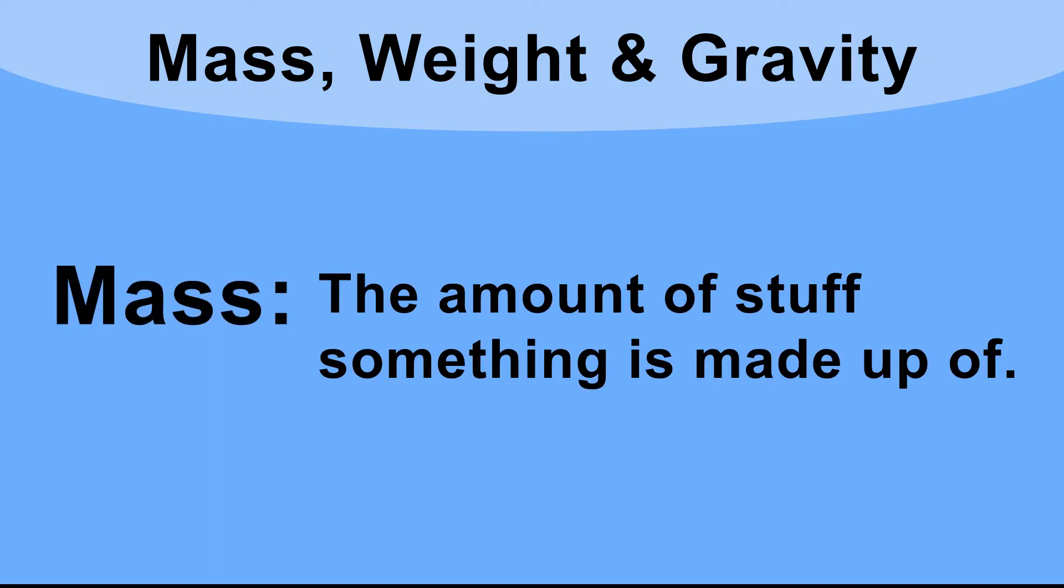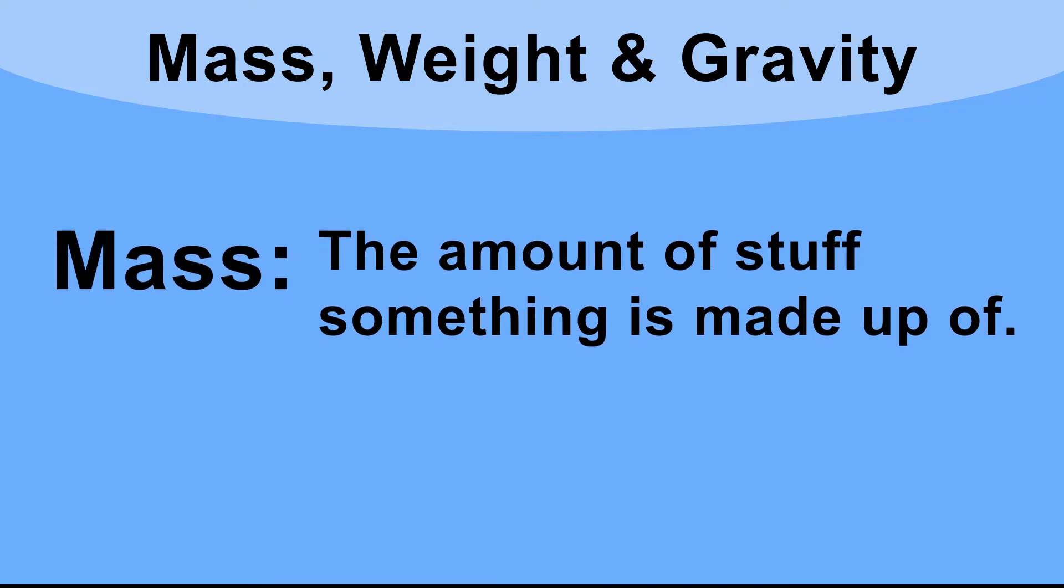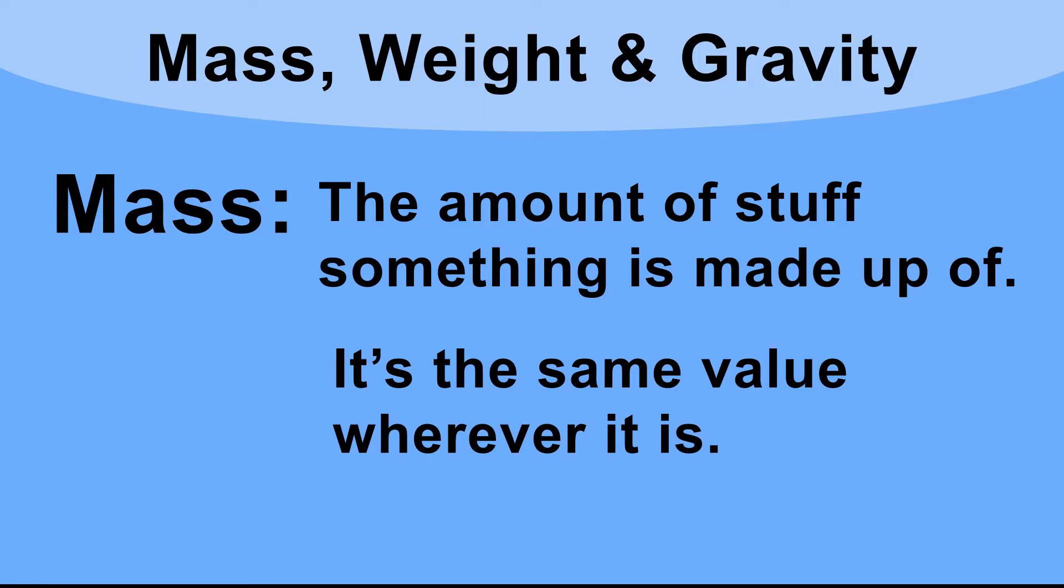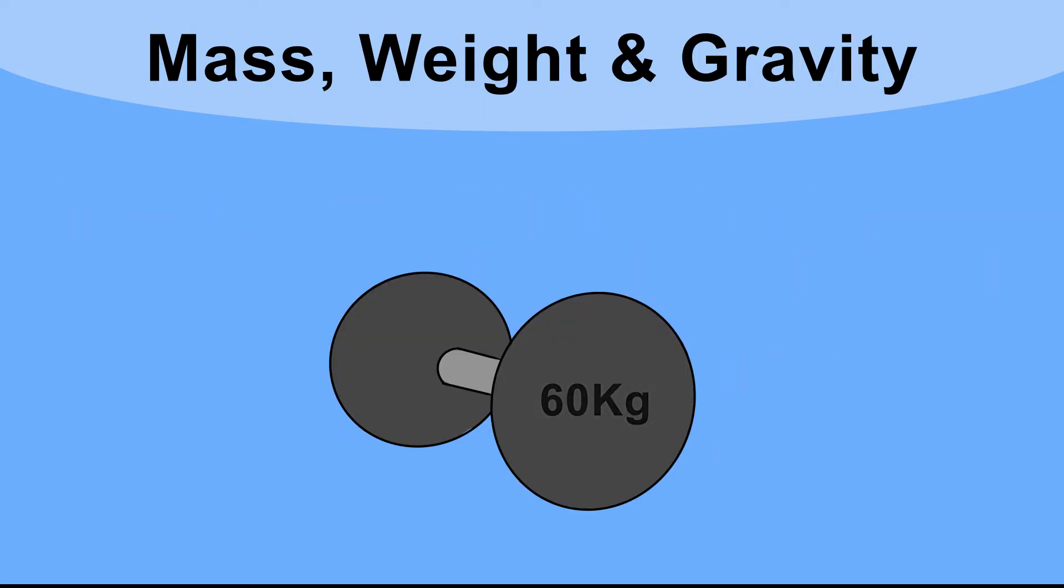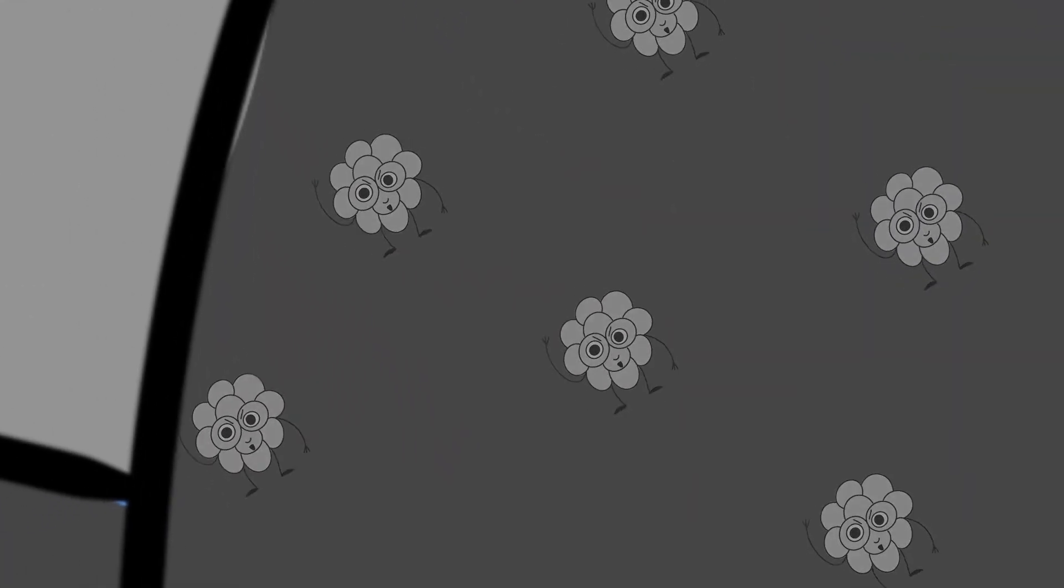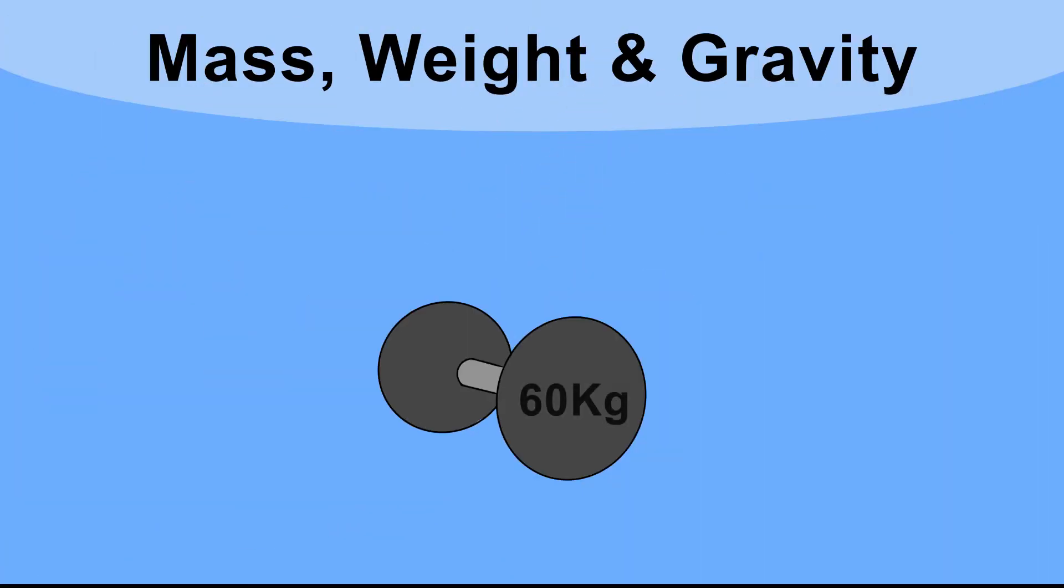Mass is the amount of stuff something is made up of. It's the same no matter where that object is. Think about this dumbbell. No matter where it is, it will always contain the same amount of metal—in this case, 60 kilograms of metal.